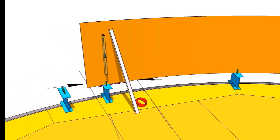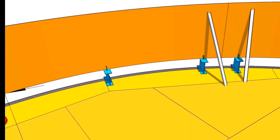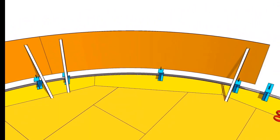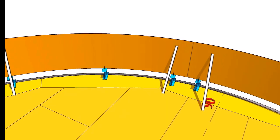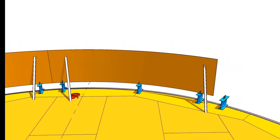Erect the second top shell course on the chairs placed on the annular plate and take care to match the inner diameter. Check the verticality of the shell plate at both ends of the shell plate and provide temporary support as shown.